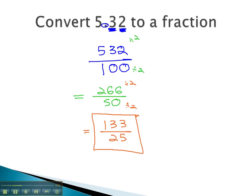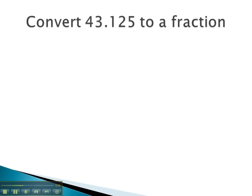Let's try another example where we count the number of decimal digits to tell us the number of zeros in the denominator. Here we can take 43125 with no decimal and put it in the numerator of our fraction. Our denominator, we know, is going to be a 1 with a bunch of zeros after it.